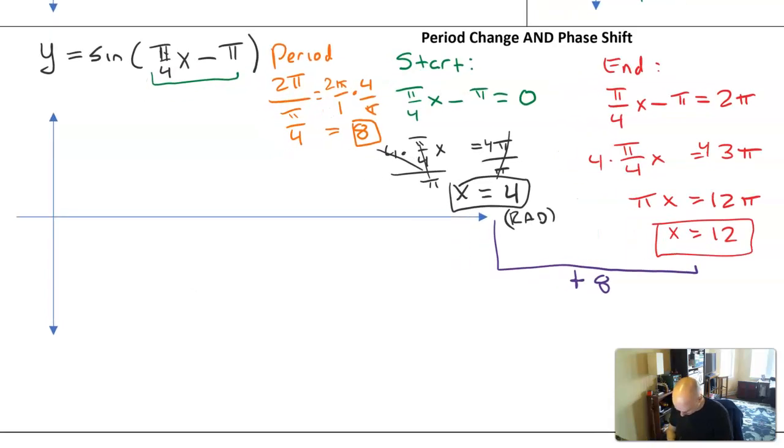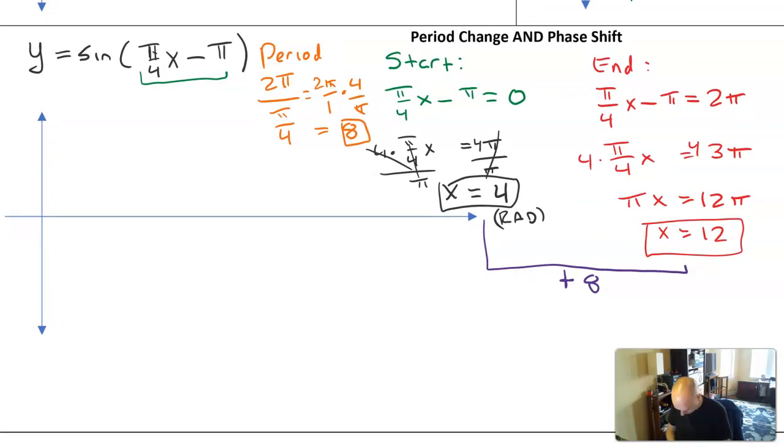Okay, so let's now sketch this out. We're actually done most of the work already. I'm going to make some tick marks. Let's go 1, 2, 3, 4, 5, 6, 7, 8, 9, 10, 11, 12. My graph needs to go up to 1, down to minus 1. It needs to start at 4, it needs to end at 12. It's sine, so it has landmark points like so.